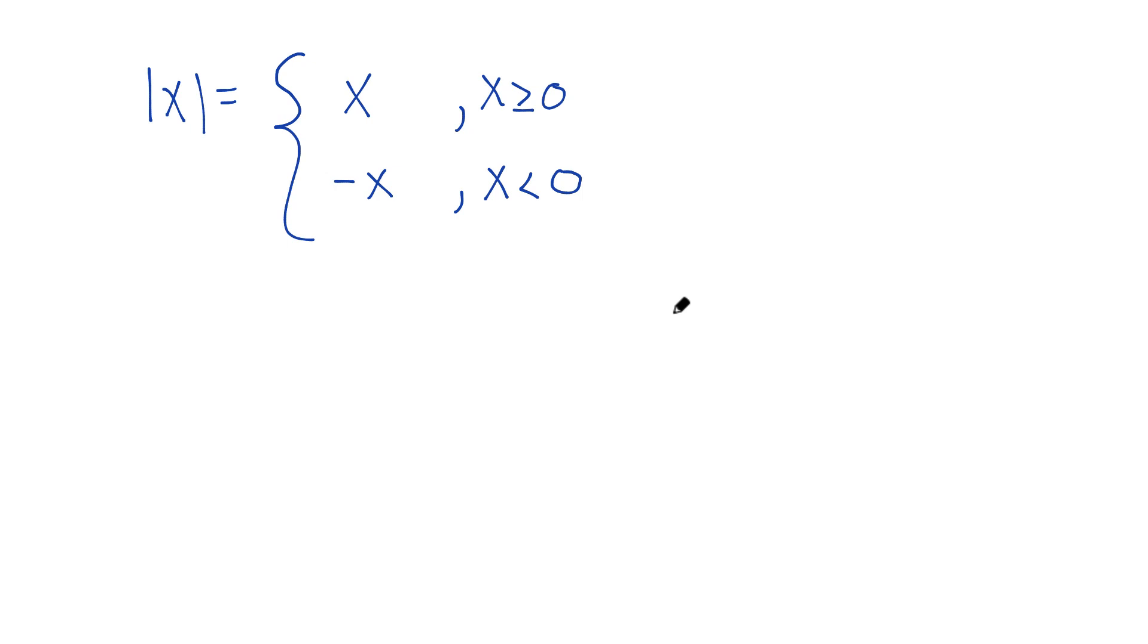One of the most popular and powerful functions, especially at the start of real analysis, is the absolute value function. Here it is if you've never seen it before. We denote the absolute value with these vertical bars around x, and it's defined as this piecewise function. It's just x if x is greater than or equal to 0, and it's minus x if x is less than 0.